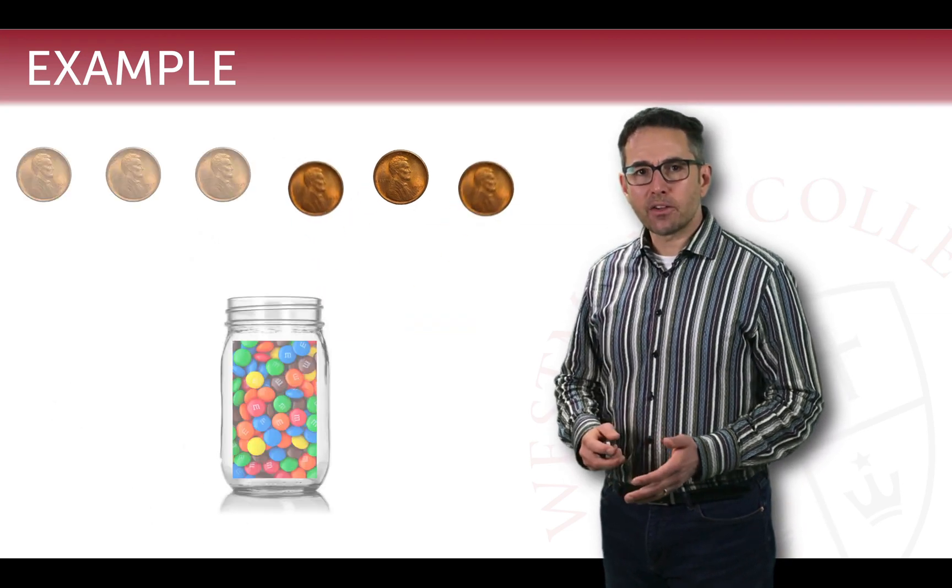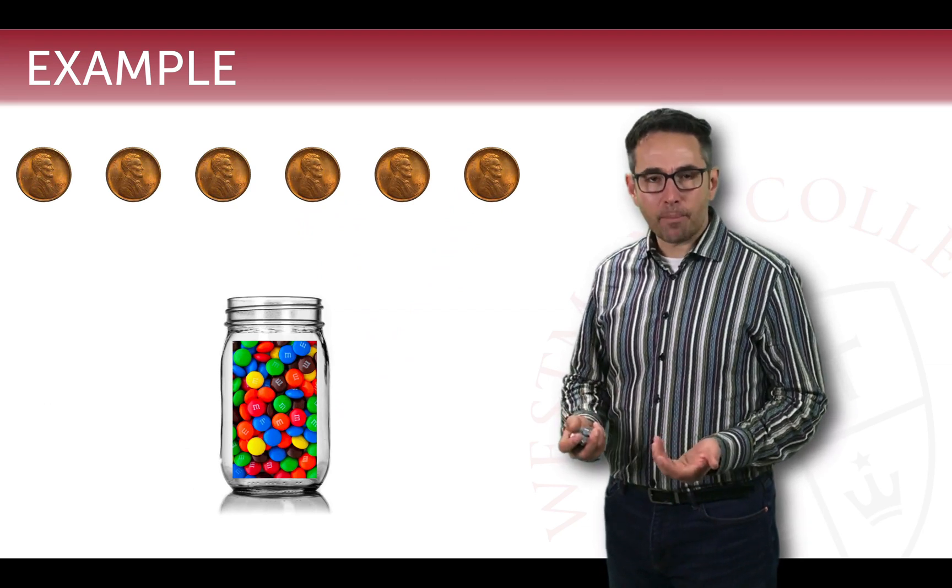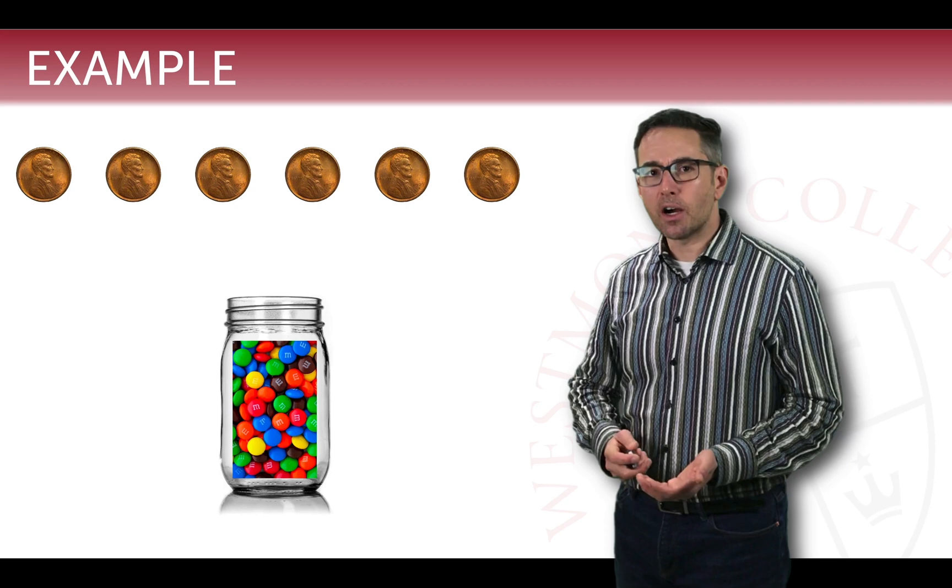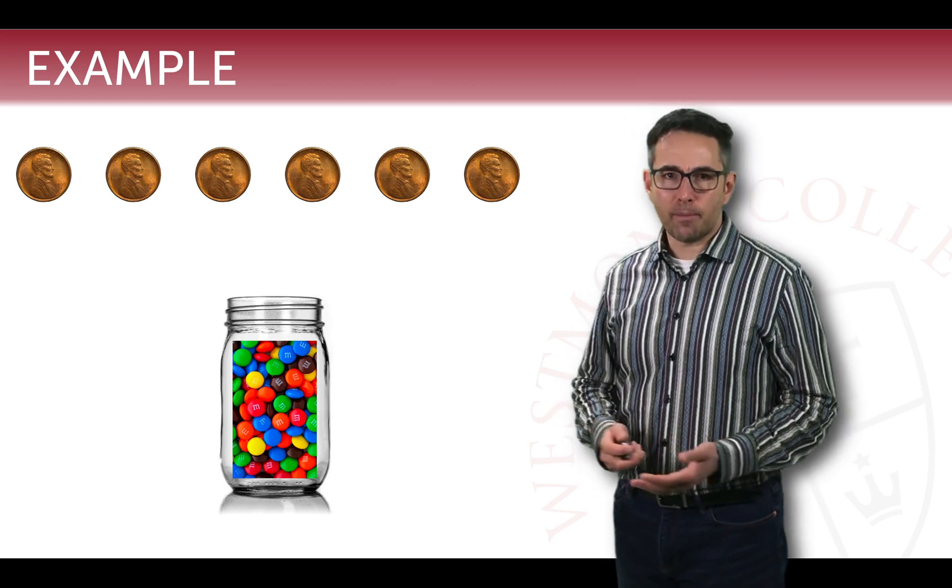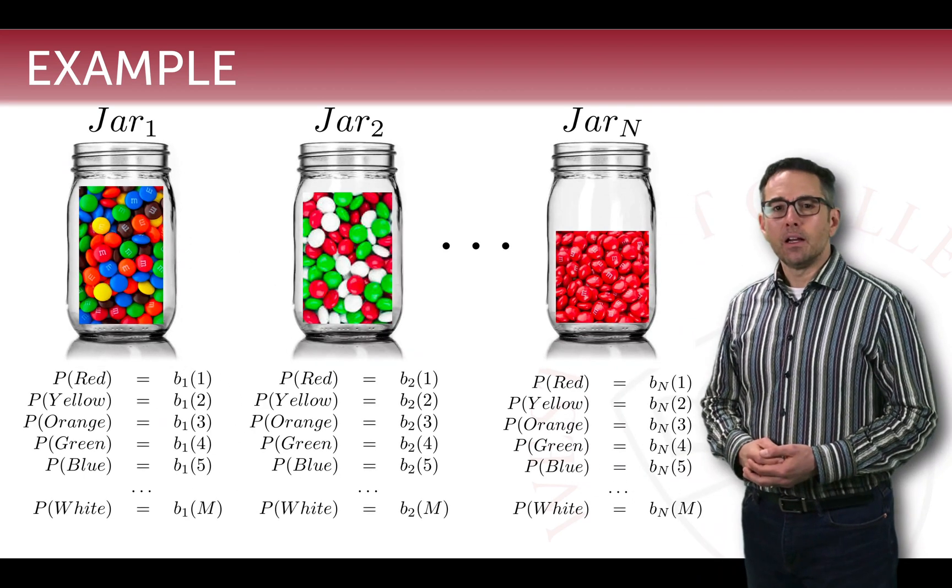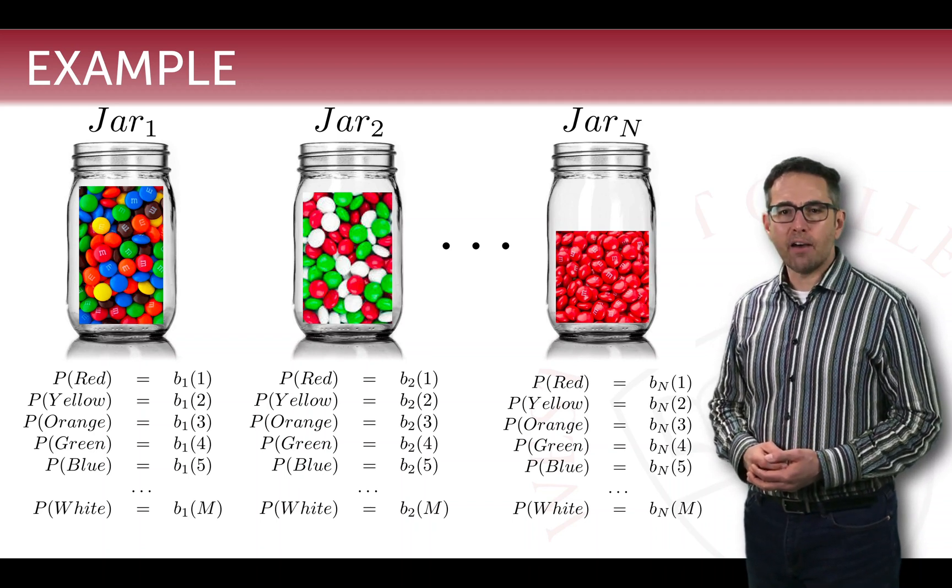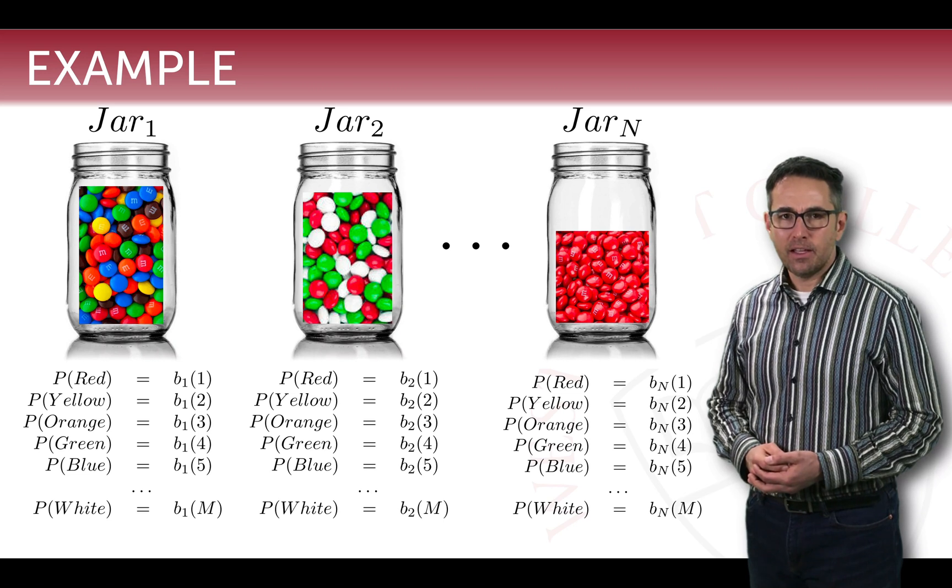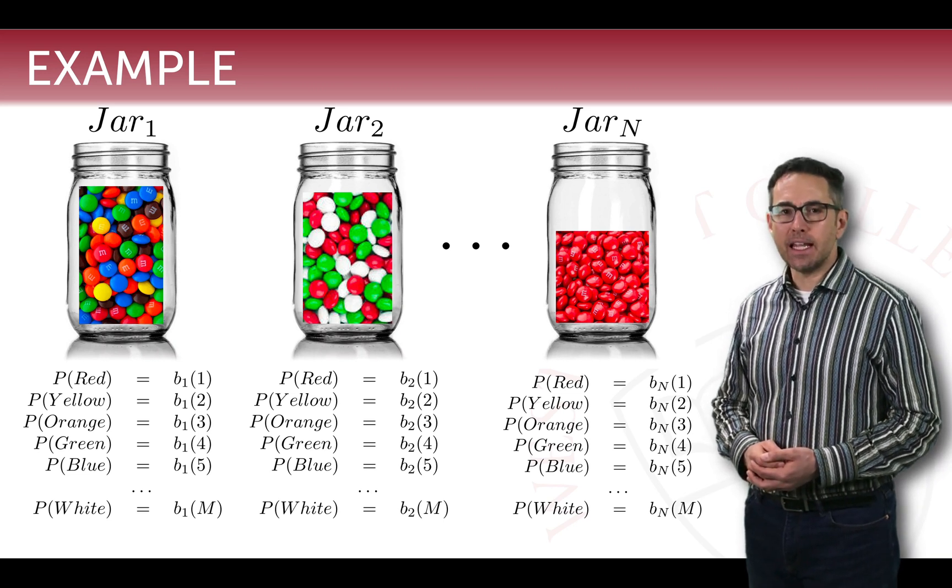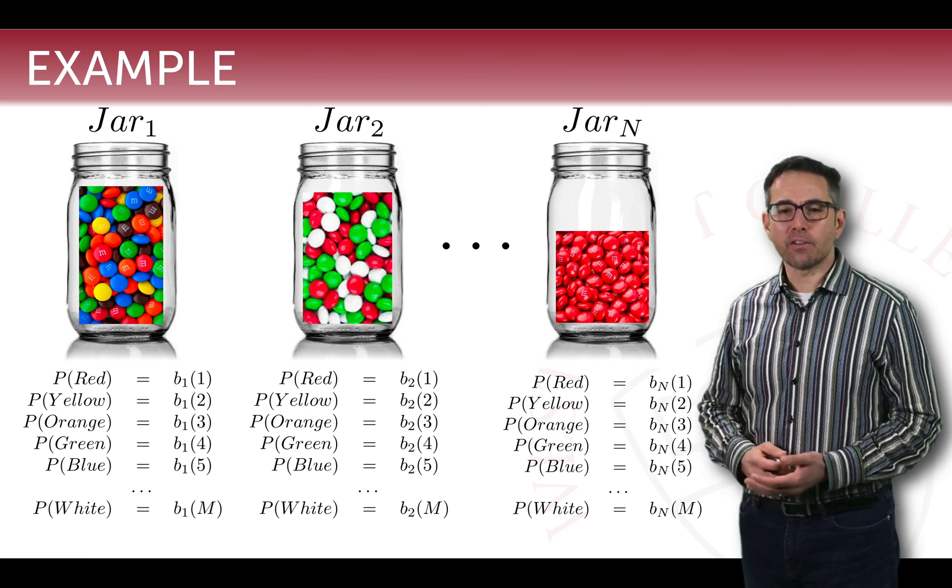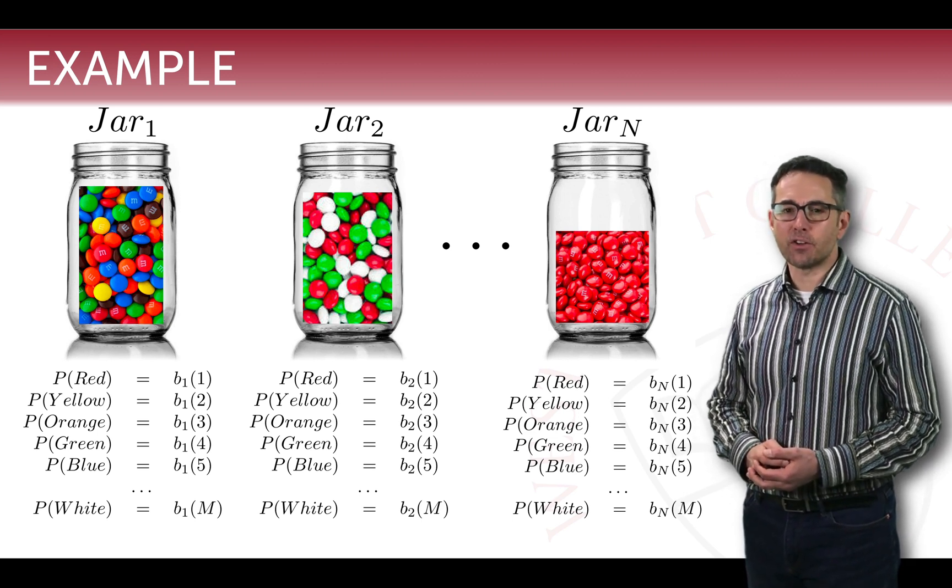What I'd like to do in this lecture is think about a similar motivation for a hidden Markov model, but instead we'll use a jar of candy, we'll call them M&Ms. In this example, what we want to consider is that we have a set of N different jars. Each one of those jars contains M&Ms and the color of the M&Ms, or the distribution of colors, varies between the different jars.